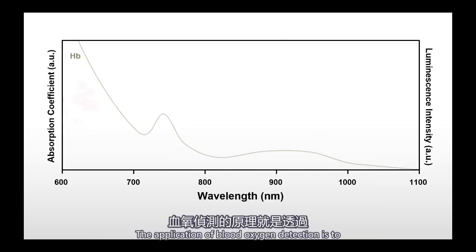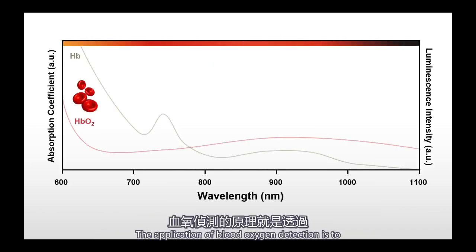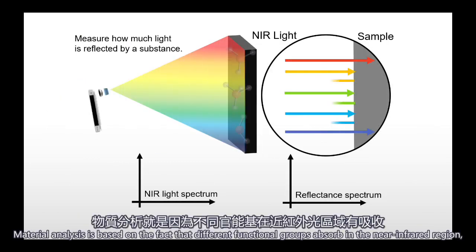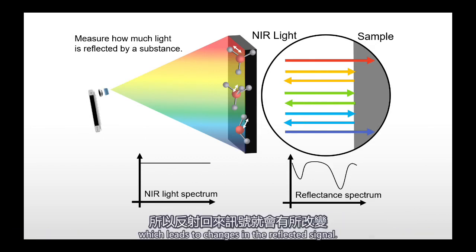The application of blood oxygen detection is to convert the trend of the absorbance of near-infrared light in deoxygenated hemoglobin and hemoglobin. Material analysis is based on the fact that different functional groups absorb in the near-infrared region, which leads to the change in the reflectance signal.